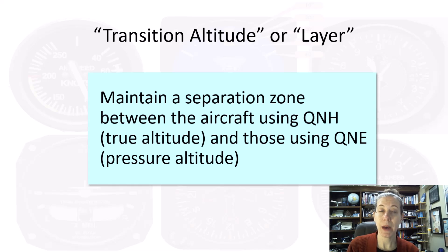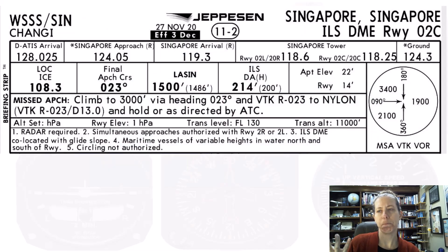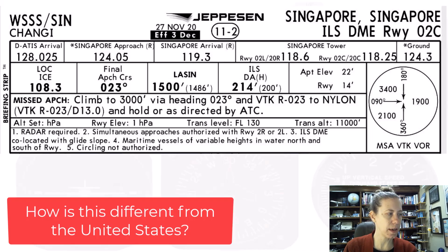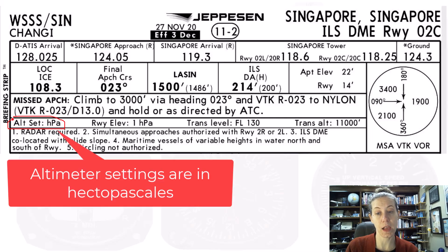But what about this airport? This is in Singapore. We have an ILS approach and a Jeppesen briefing strip again. I want to point out some interesting things that are significantly different from the one we looked at in the U.S. First of all, the altimeter setting says it's in hectopascals. Also, it gives our runway elevation in hectopascals.